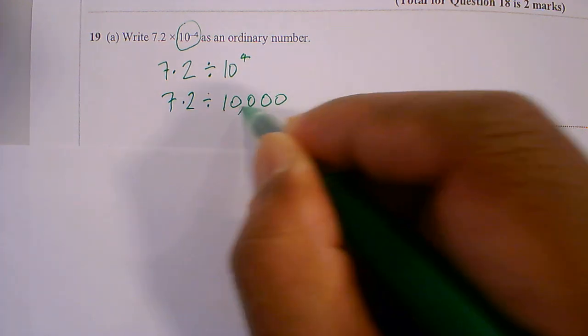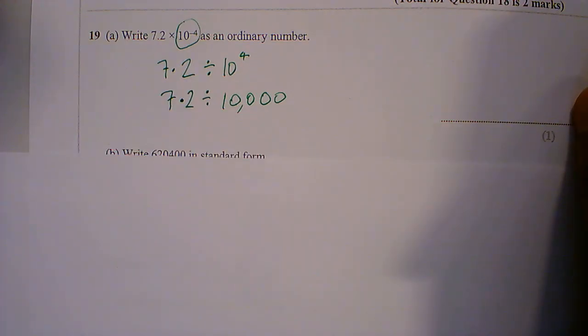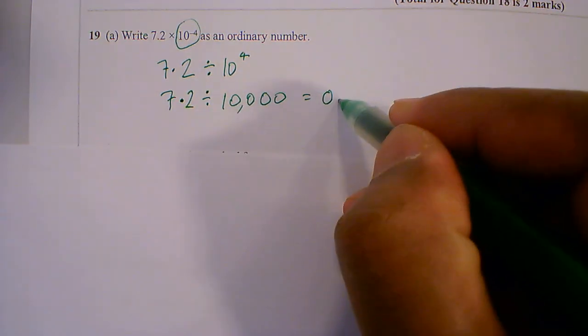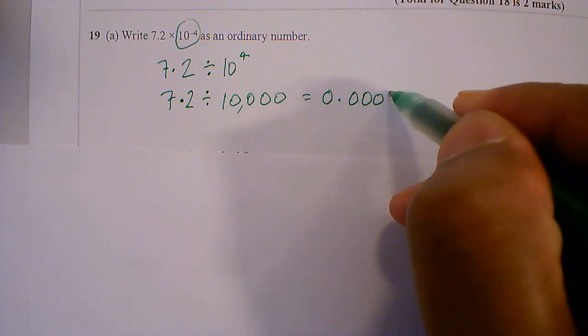1, 2, 3, 4, so dividing that by 10,000. Okay, and so your answer will become 0.00072.